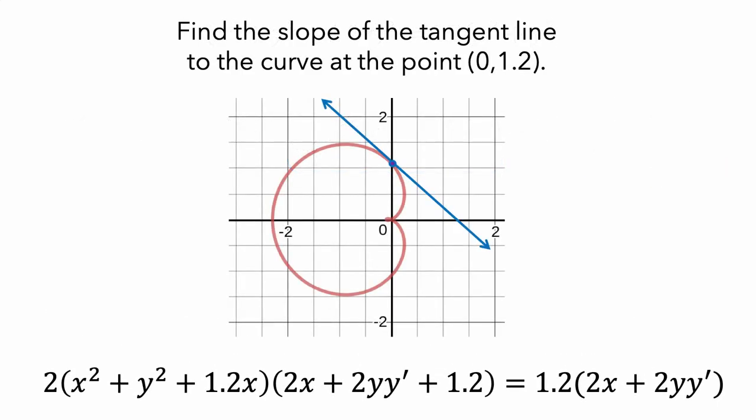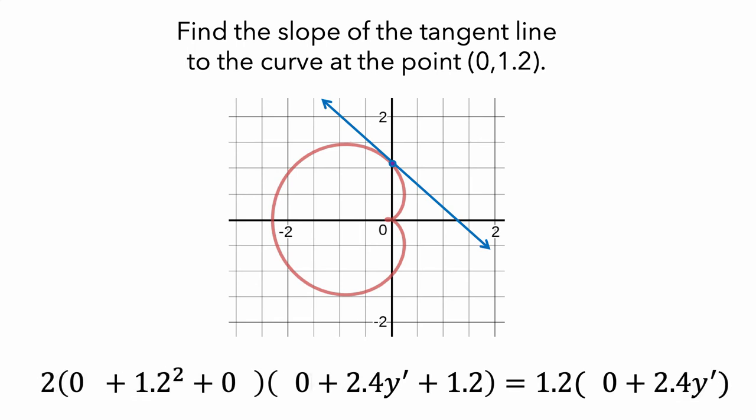Let's try to find the slope of the tangent line at the point. The first thing we can do is to substitute 0 for x, which changes a bunch of terms to 0. Then we can substitute 1.2 for y. Finally, we can do some computation to get 2.88 times 2.4 y-prime plus 1.2 equals 1.2 times 2.4 y-prime.